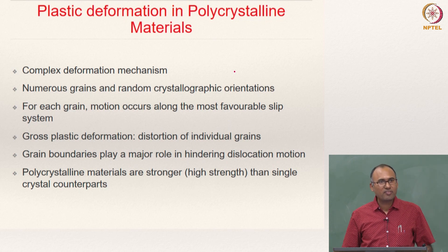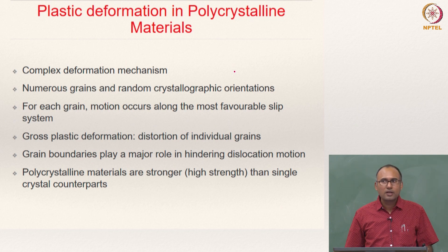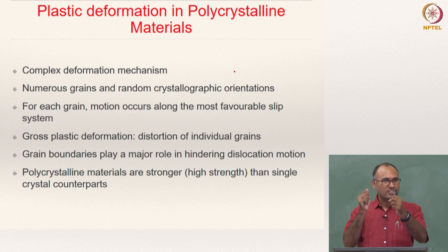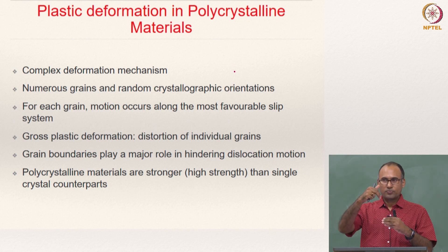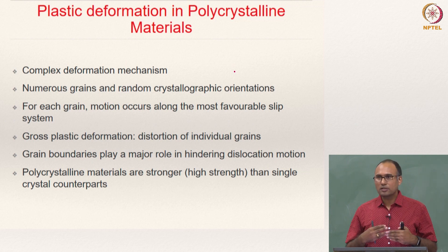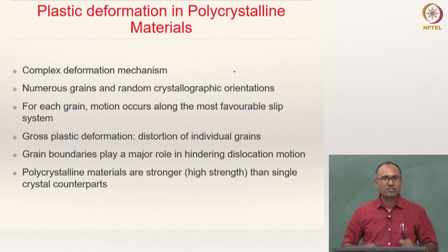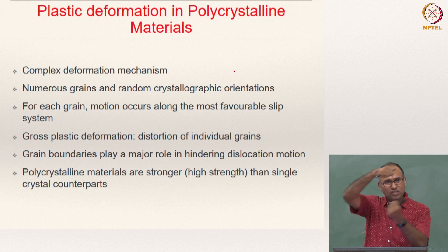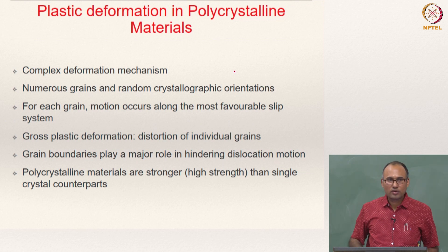We have also discussed strain hardening or work hardening in both single crystal and polycrystalline material. In single crystal material, it is typically stage 2 wherein when you increase the dislocation density, dislocations start interacting with each other — dislocation entanglement, annihilation, and repulsion may happen. All these interactions impede dislocation motion. Strengthening is defined as the process of impeding dislocation motion. As you continue to increase strain, dislocation density increases, they start to interact, and as a result the material becomes stronger.